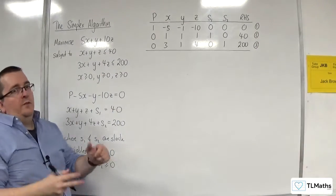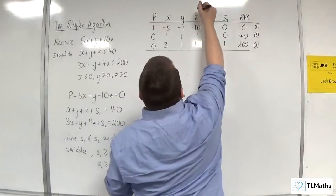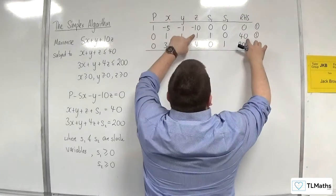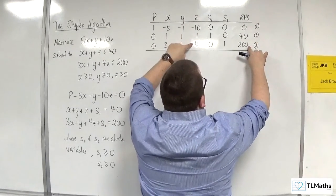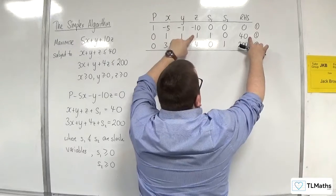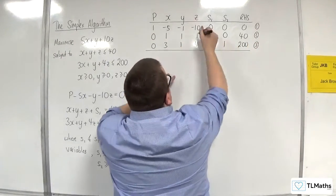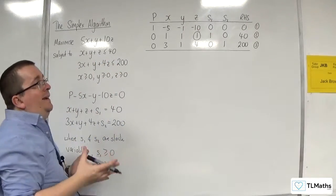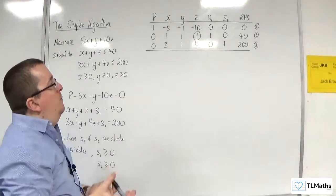Okay, so first of all, we look for the most negative in the top row, which is the minus 10. And so that's going to be our pivot column. We then do 40 divided by 1 and 200 divided by 4. So 40 divided by 1 will get us 40. 200 divided by 4 will get us 50. So it is the smallest of those two. And so this one will be my pivot. Now conveniently, that's already 1. So I'm not going to have to divide that row by anything.